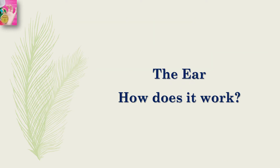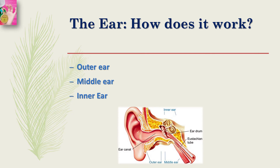The human ear is made up of the outer ear, the middle ear, and the inner ear. In general, sound waves are collected in the outer ear, amplified in the middle ear, and transduced or transformed into neural messages in the inner ear. In this video we will trace the path taken by sound waves through the ear.